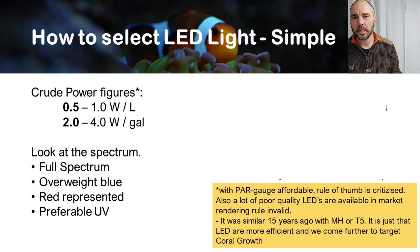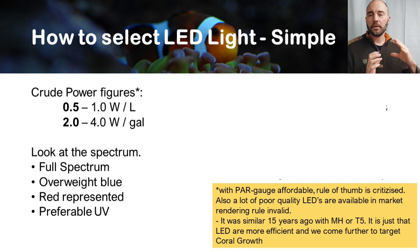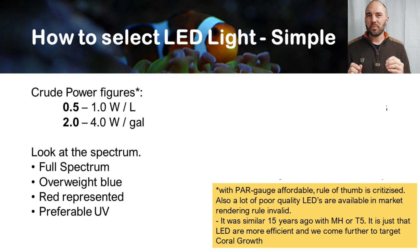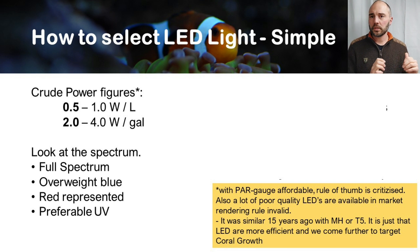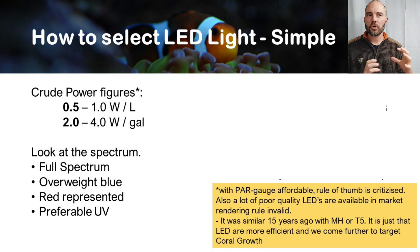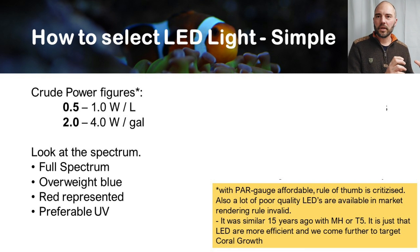Now we will go back to basics: how do you select the LED light? First, some crude sizing figures. What you should start looking for is somewhere around 0.5 to 1 watt per liter — I emphasize the 0.5 end — or 2 to 4 watts per gallon. Now there's an asterisk on that because the PAR meter is now affordable, so this rule of thumb is somewhat criticized. It's also criticized because there are a lot of poor quality LEDs available in the market, which renders the rule of thumb invalid.